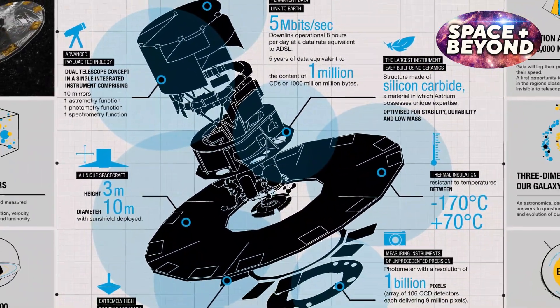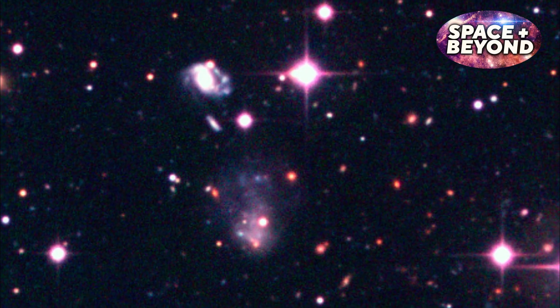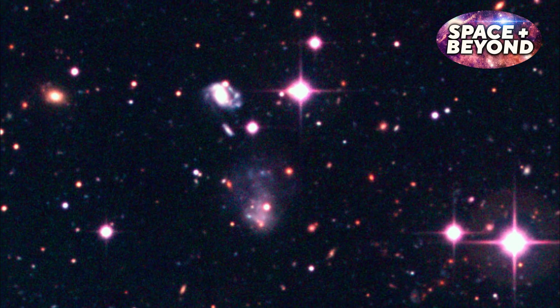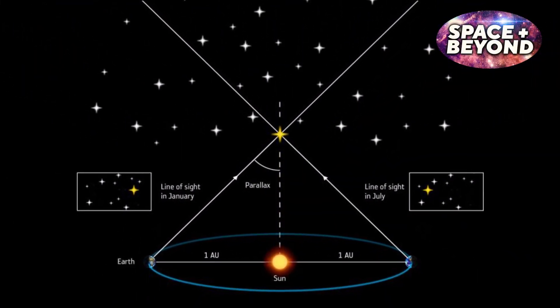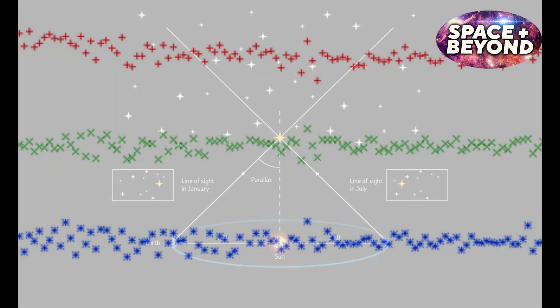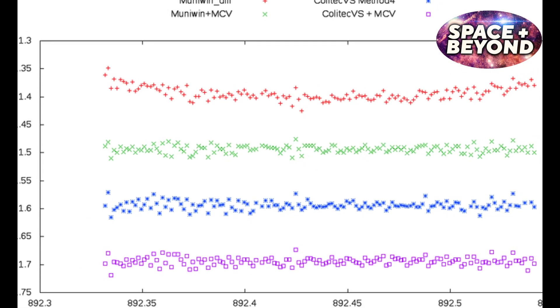Gaia's instruments are designed to measure the positions and distances of celestial objects, as well as the light emanating from them. This includes measurements of angular separations, fluxes or brightness in multiple wavelength bands called photometry, and spectra for stars brighter than magnitude 17.